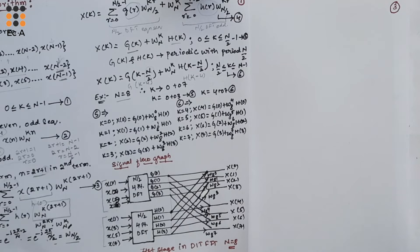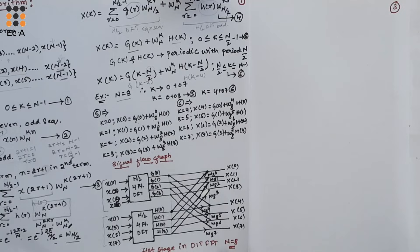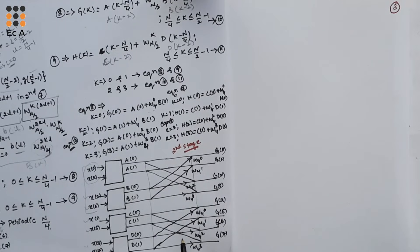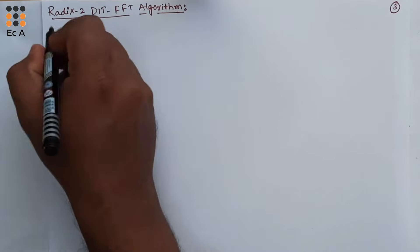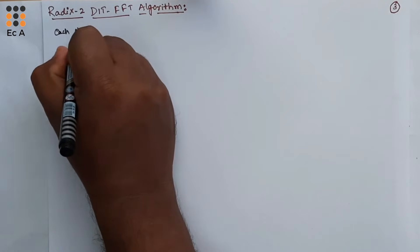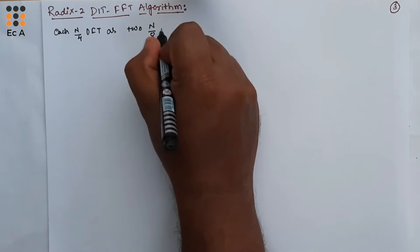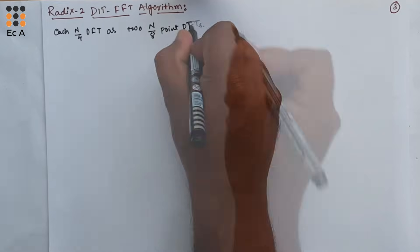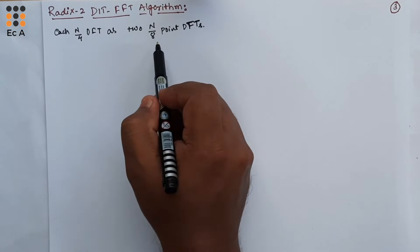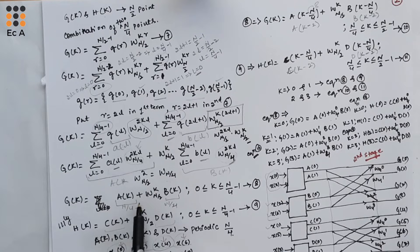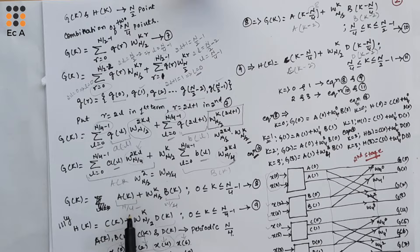In the previous video, we completed the first stage and the second stage in decimation-in-time FFT for N equal to 8. Now let us continue the process of decimation. We can represent each N/4 DFT as 2 N/8 point DFTs. In the previous lecture, we had decomposed the N/2 point DFT into N/4 point DFT. For this N/4 point DFT, we will decompose it into N/8 point DFT.